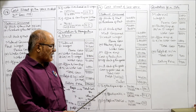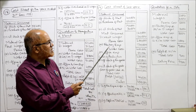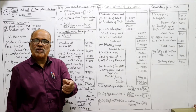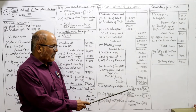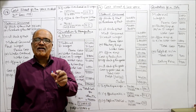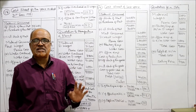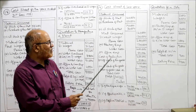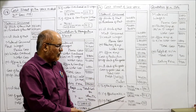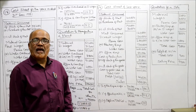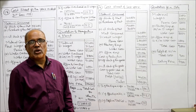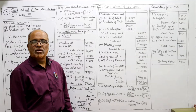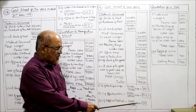Now we calculate the percentages. Percentage of factory expenses on direct wages: factory expense 1,20,000, direct wages 1,20,000 — so 1,20,000 ÷ 1,20,000 × 100 = 100%. Factory expenses are 100% of wages. Percentage of office expense on works cost: office expense 50,000, works cost 4,00,000 — so 50,000 ÷ 4,00,000 × 100 = 12.5%. Now percentage of profit on total cost: profit 44,500, total cost 4,45,000 — so 44,500 ÷ 4,45,000 × 100 = 10%.